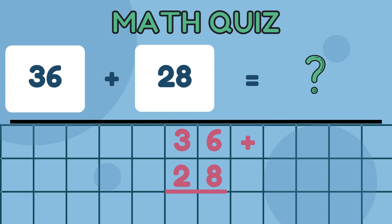Example 3. 36 plus 28. Step 1. Add the digits in the column closest to the plus sign. 6 plus 8 equals 14.